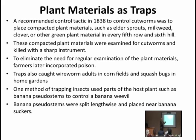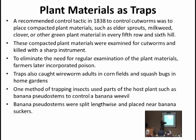كانوا يضعون بقايا نباتات خضراء في مكان معين لتأتي الحشرات القارضة إليها بدلاً من المحصول المزروع. وبمجرد أن تأتي القارضات على هذه النباتات يجمعونها ويفحصونها ويقتلونها. لاحقاً مع التطور صاروا يخلطون سُماً مع هذه النباتات حتى تأكل الحشرة وتموت بدلاً من أن يضطروا لتفتيشها يدوياً.